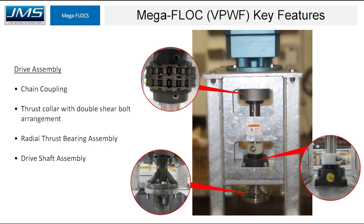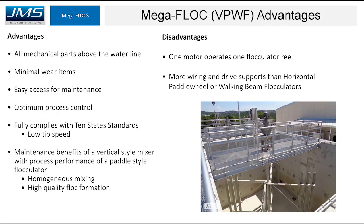Moving on to vertical paddle wheel flocculators. The drive assembly uses a chain coupling connecting to the output shaft of the gearbox. A thrust collar takes up all axial loads heading into the gearbox, and the radial thrust bearing takes up radial loads, which can significantly increase the lifespan of the gearbox. All mechanical parts are above the water, minimal wear items, easy access for maintenance, optimum process control with speed adjustment, and it fully complies with Ten State Standards with a low tip speed. You get the maintenance benefits of a vertical style mixer with the performance of a paddle style mixer.